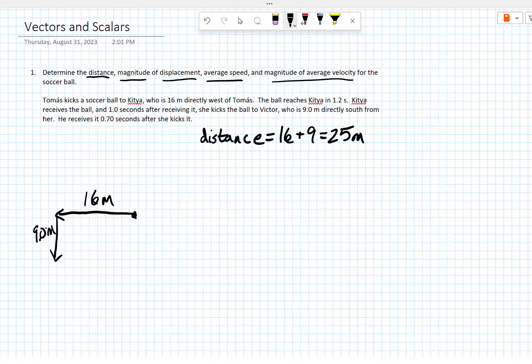The displacement is going to be the straight line distance, and for displacement we're going to use the variable S. We can just draw a straight line from the tail of our first vector to the tip of our last vector to get that displacement. Call that S for displacement. Notice that this forms a right triangle, so we can use the Pythagorean theorem to figure that out. It's going to be the square root of 16 squared plus 9 squared, all under the square root.